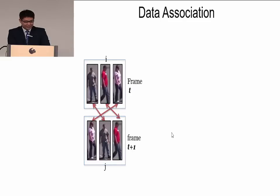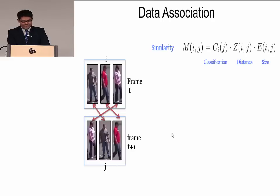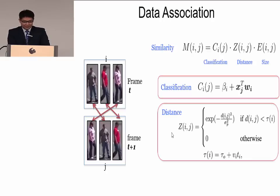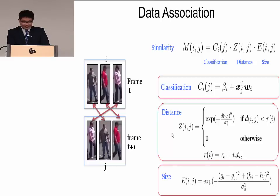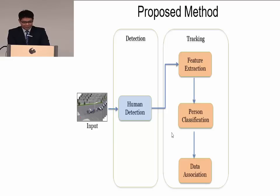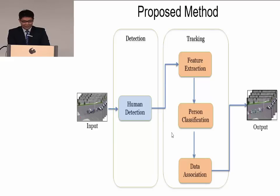The data association finds the best match between two frames, T and T+1. We calculate the similarity matrix using three terms. The first term is the classification score: C_ij is the classification score of example j using classifier i. Z is the distance term, which measures the distance between two detections i and j. After data association, we get the output tracks. The framework consists of human detection, feature extraction, person classification, and data association.